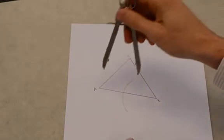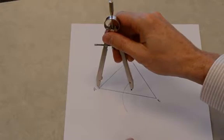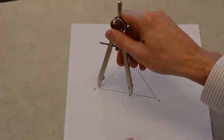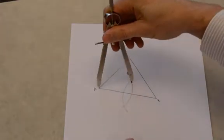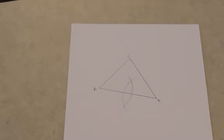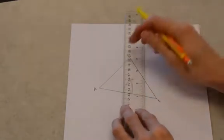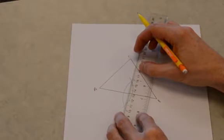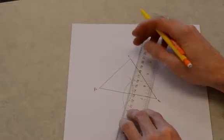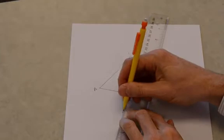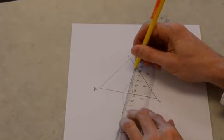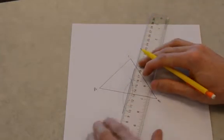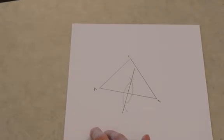So I'm going to bisect segment AB first. Now the circumcenter lies at the intersection of the perpendicular bisectors. So there's one perpendicular bisector.